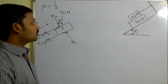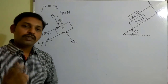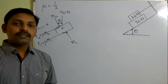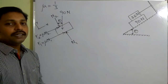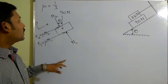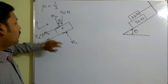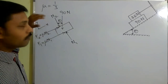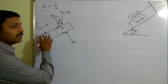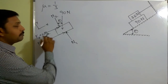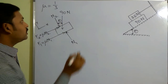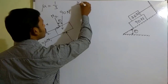I want to apply equations of equilibrium. For a coplanar concurrent force system, there are two equations: σFx = 0 and σFy = 0. Since N1 and N2 are along the Y direction, I will first apply σFy = 0 to find those values, which I can then substitute into μN1 and μN2.